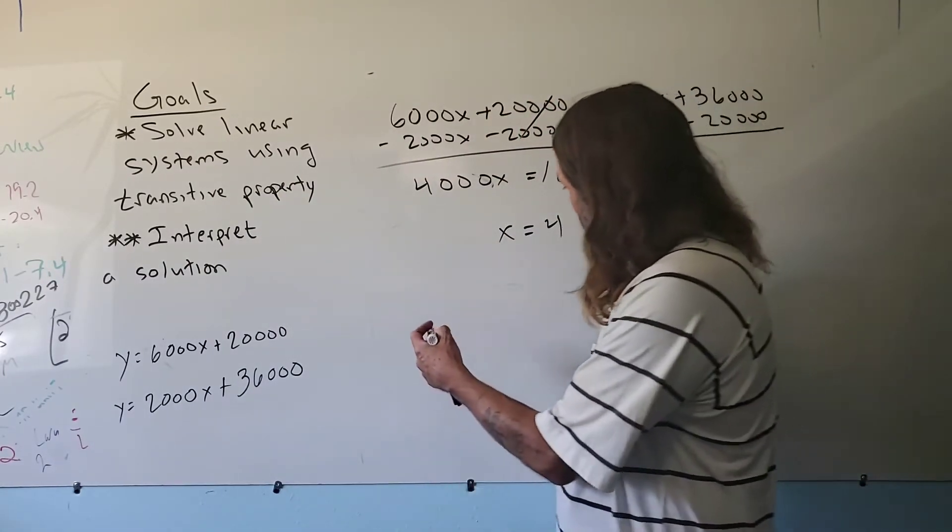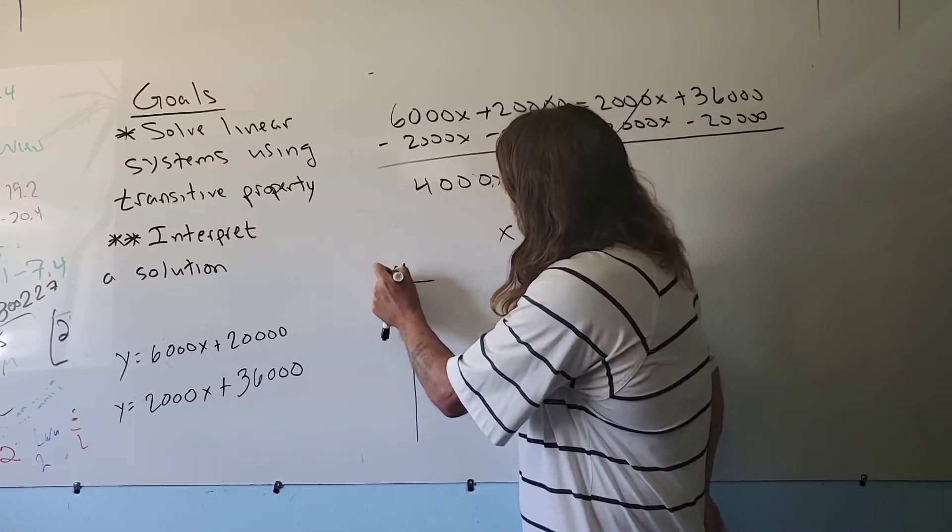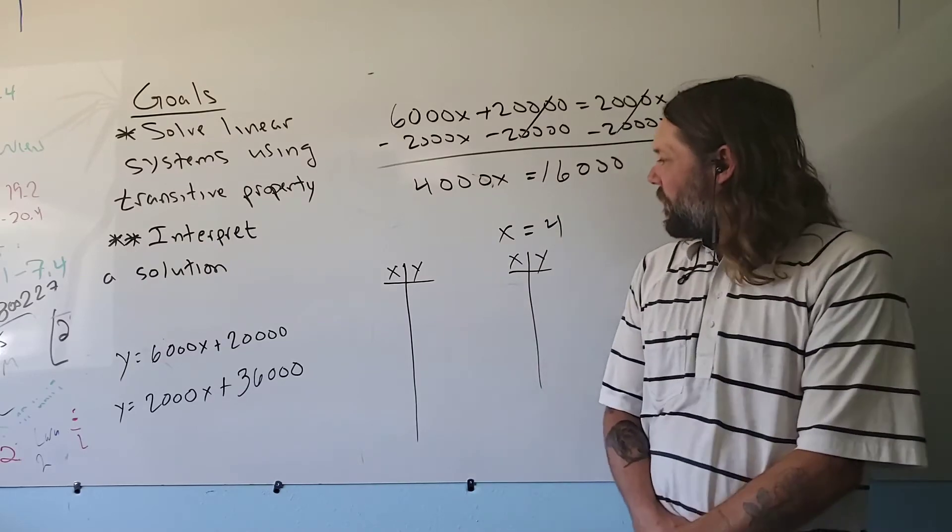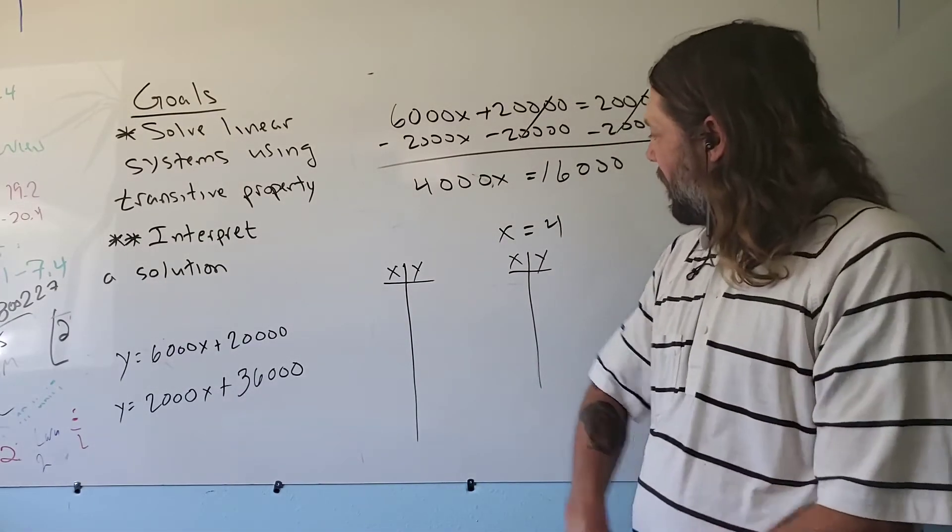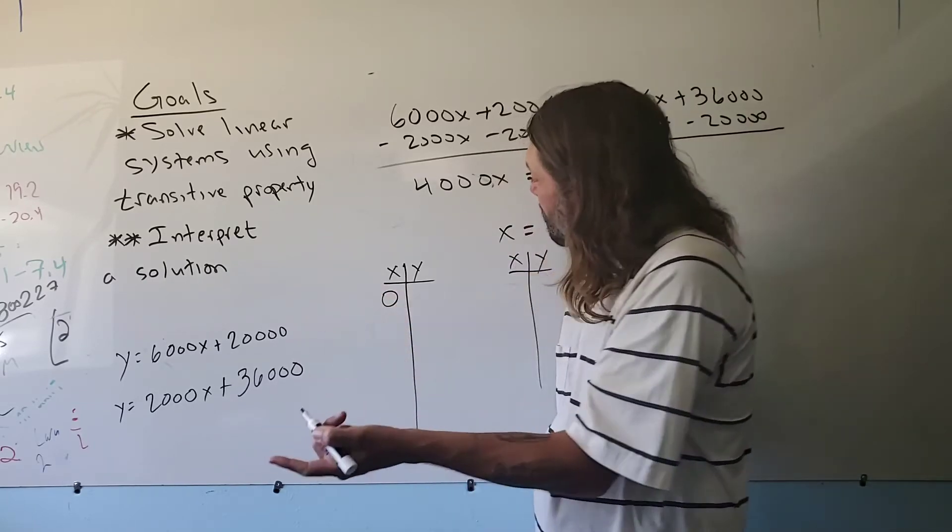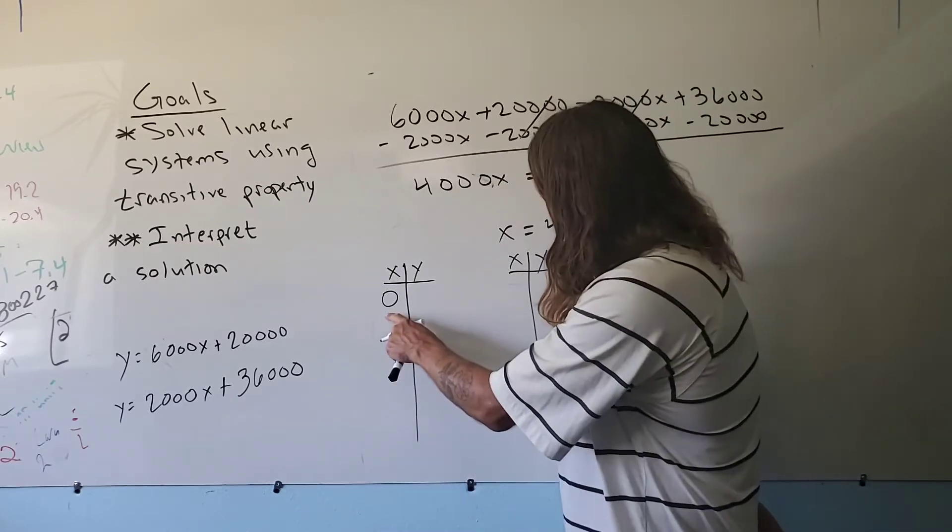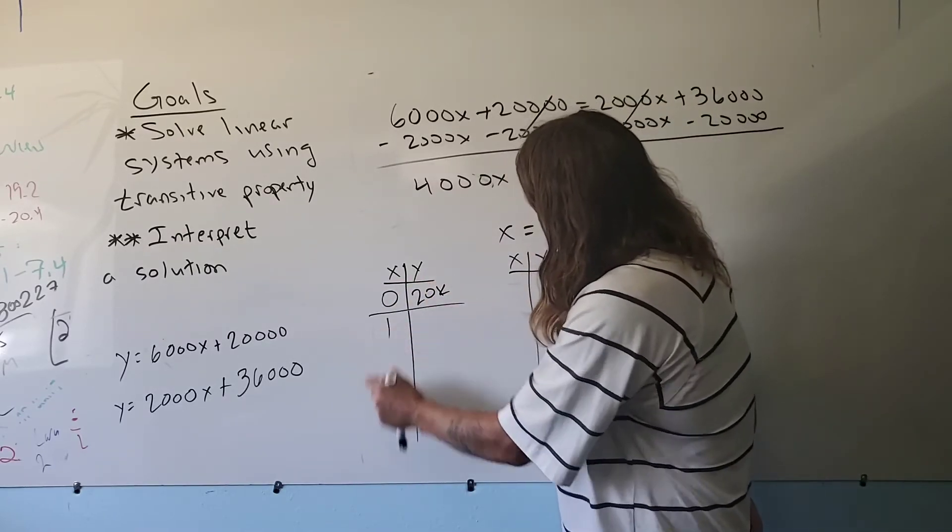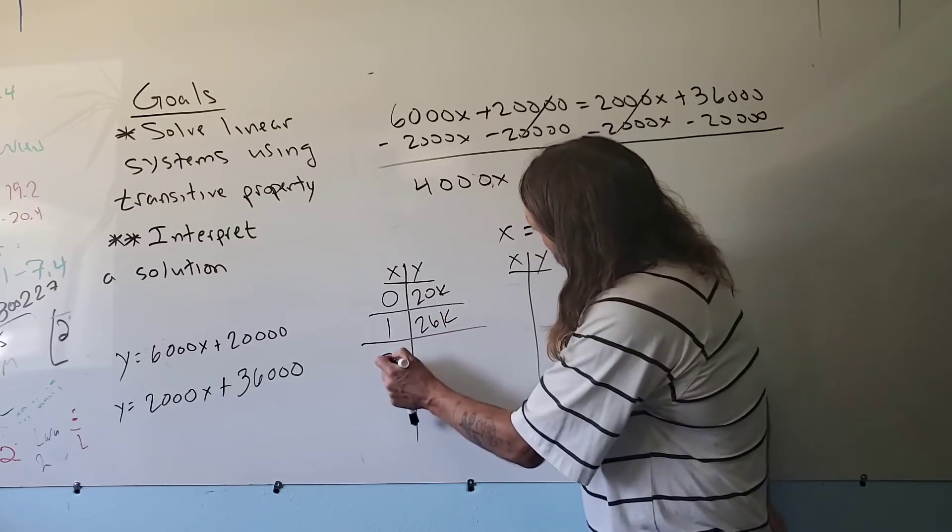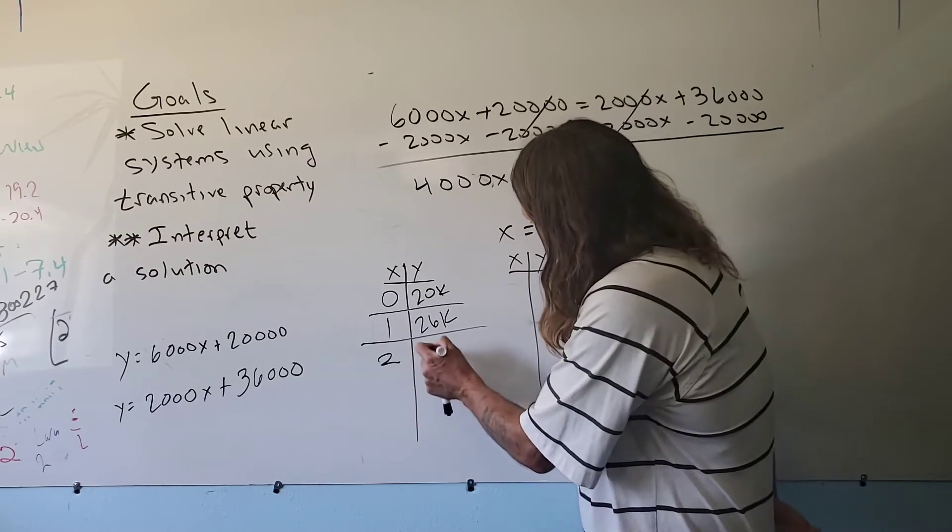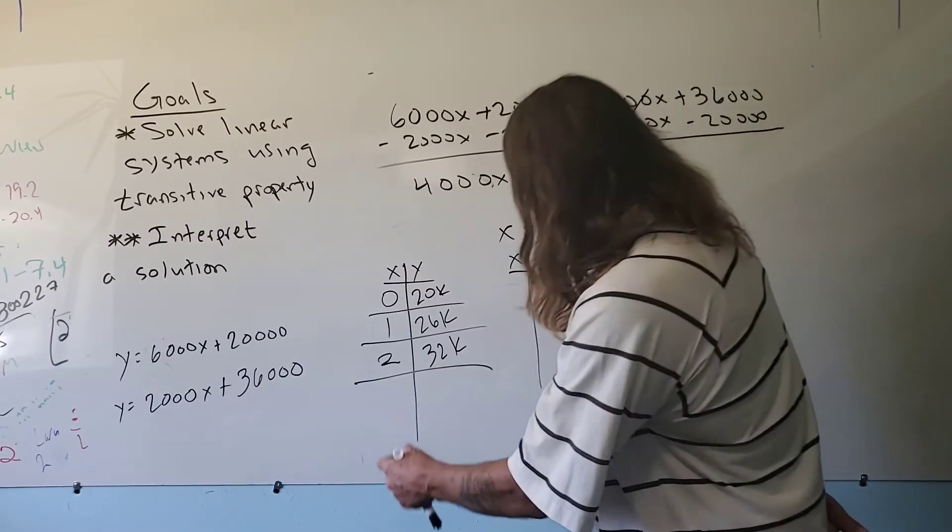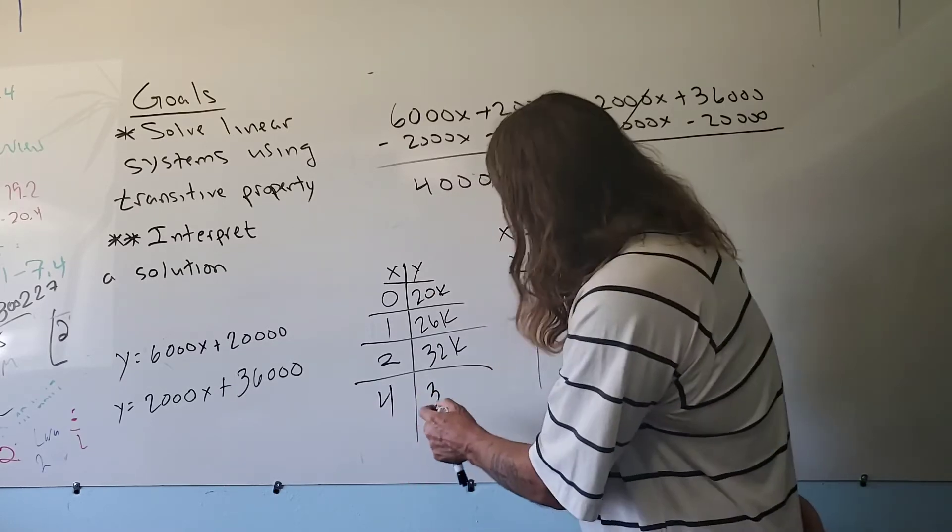This table will show a little bit more of the data. X is the number of years at the job. So this first table will be for this job. My first year, which is a zero, I'm just going to put 20K. My second year, which is a one, I've made 26,000. My third year, which is a two, I've made 32,000. My fourth year, I made 38,000.